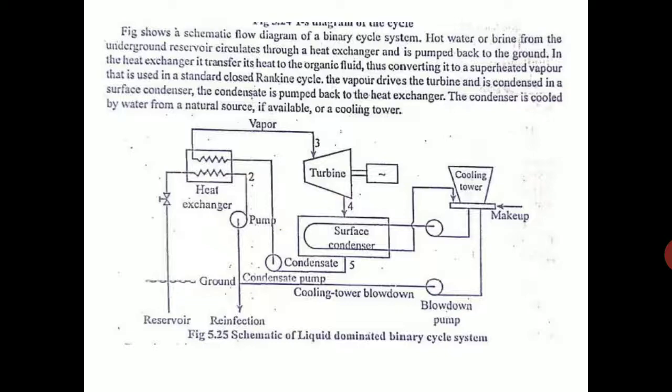The refrigerant moves in the closed loop cycle. It is evaporated in the heat exchanger which acts like a boiler, then expanded in the turbine, cooled in the condenser, and pumped back. For the condenser to work efficiently, you have a cooling tower also.